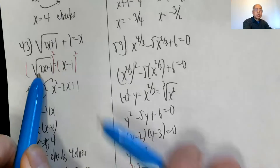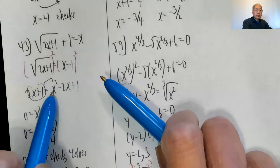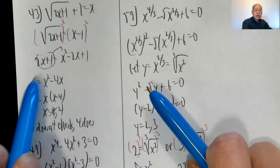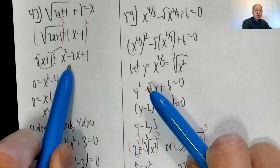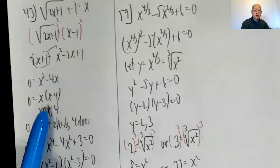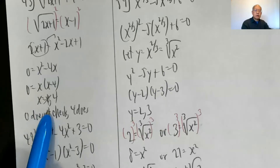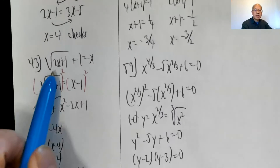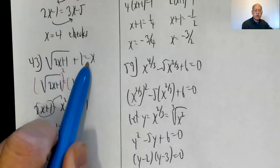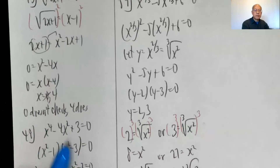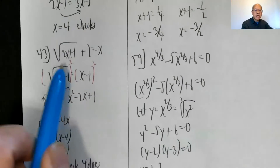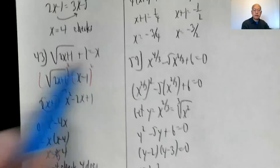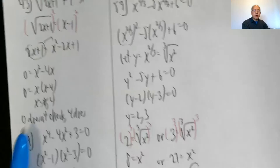Problem forty-three: subtract one, then square both sides. Two x plus one equals x squared minus two x plus one. Throw everything to the right side: zero equals x squared minus four x. Factor out an x: x equals zero or four. But zero does not check — plugging in zero gives square root of one plus one equals zero, which is nonsense. But four does check: two times four is eight plus one is nine, square root of nine is three, plus one equals four. So the only solution is x equals four.